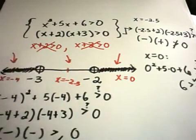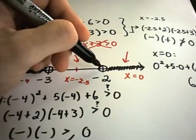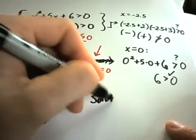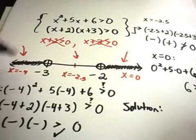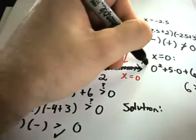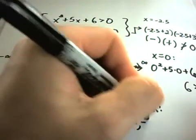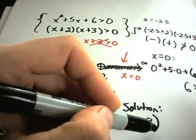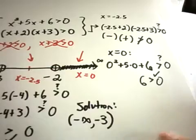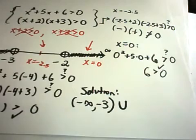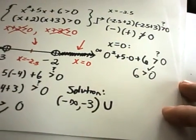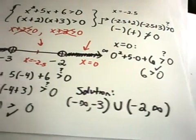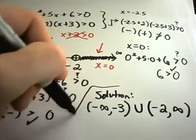Any number smaller than negative 3 satisfies the inequality, nothing between negative 3 and negative 2 works, and anything bigger than negative 2 does work. Writing the solution in interval notation: from negative infinity to negative 3, not including negative 3 — that's what the open circle and parenthesis mean — union negative 2 to positive infinity. Brackets would mean we include the value; parentheses mean we cannot.